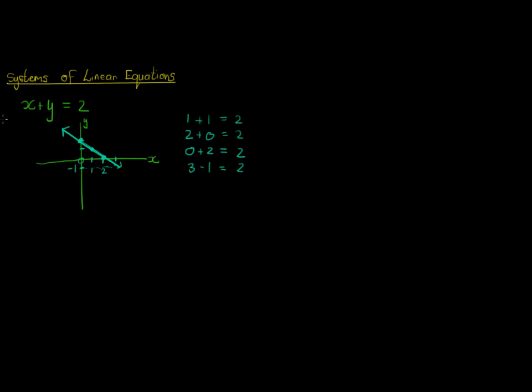Okay, now a system of linear equations is when I have a few of these at the same time. So we can see that this equation has many solutions. Now what if I had two equations? What if I had x plus y is equal to 2 and x minus y is equal to 0.